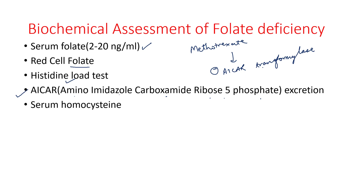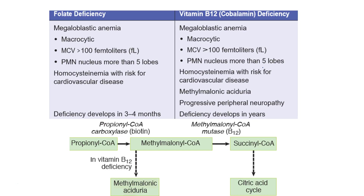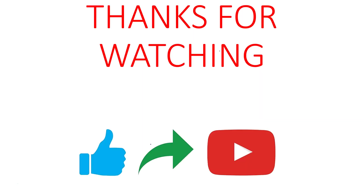Serum homocysteine will be elevated — there will be hyperhomocysteinemia. Peripheral blood smear will show megaloblastic anemia. To differentiate folate deficiency from vitamin B12 deficiency: they both show megaloblastic anemia and hyperhomocysteinemia. But in addition, vitamin B12 deficiency will show methylmalonic aciduria and progressive peripheral neuropathy. Methylmalonic aciduria occurs because B12 is required for the function of methylmalonyl-CoA mutase, which converts methylmalonyl-CoA to succinyl-CoA. Deficiency of vitamin B12 causes increased methylmalonyl-CoA to accumulate, which is excreted in the urine. This concludes one-carbon metabolism. Thanks for watching and remember to subscribe.